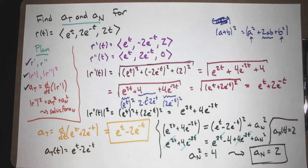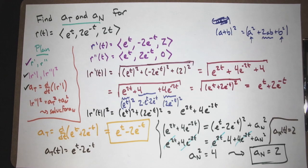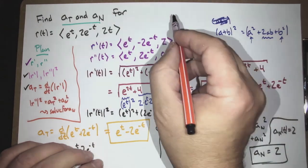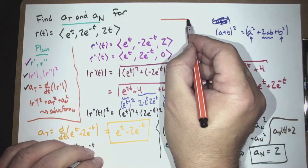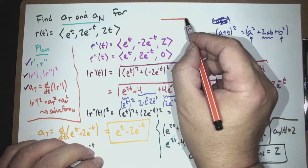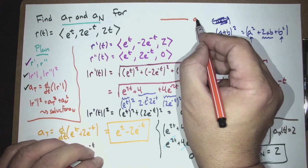Also note: a_T and a_N are numbers — scalar functions of t — not vectors themselves. The vectors are T (essentially r prime normalized) and N (the unit normal). We're mainly interested in these scalar coefficients. They're functions of t, so sometimes you'll get a constant like 2, and sometimes you won't.